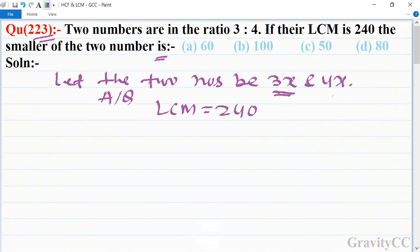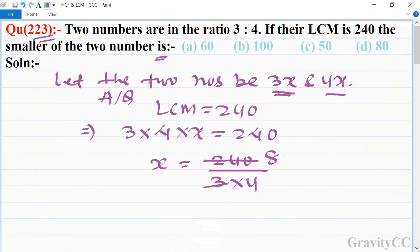LCM of 3x and 4x is equal to 3 into 4 into x, which equals 240. So x equals 240 divided by 3 into 4. Cancel by 3, again divide by 4 to get 20. So x equals 20.